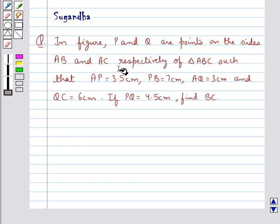Such that AP is equal to 3.5 cm, PB equal to 7 cm, AQ equal to 3 cm and QC equal to 6 cm. If PQ equal to 4.5 cm, find BC.